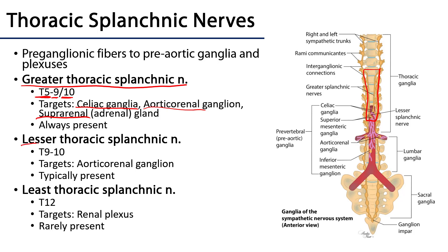There is also a lesser thoracic splanchnic nerve, supplied from ganglia T9 to T10, with fibers targeting specifically the aorticorenal ganglion. This nerve is typically present. There is also the least thoracic splanchnic nerve, which when present comes from the T12 ganglion and goes into the renal plexus. It is rarely present.